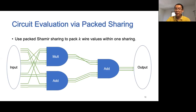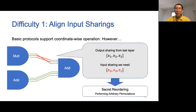However, there are two difficulties with this approach. The first difficulty is the need of aligning input sharings. Each packed sharing contains a vector of K secrets, and basic protocols for addition and multiplication gates only support coordinate-wise operations. This requires the secrets to be in the correct order to obtain the correct answer. During the evaluation, we may encounter the scenario where the secrets are not in the order we want. For example, all parties hold an output sharing from the last layer containing secrets X1, X2, and X3, but to compute the addition gates in the current layer, parties need a sharing of X2, X3, and X1. We need to design an efficient protocol for secret reordering.